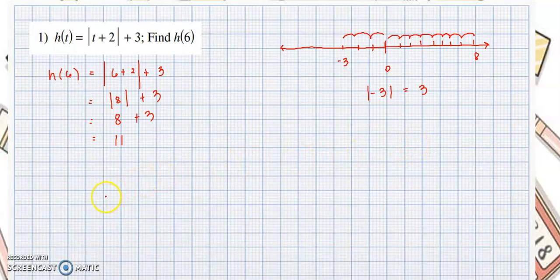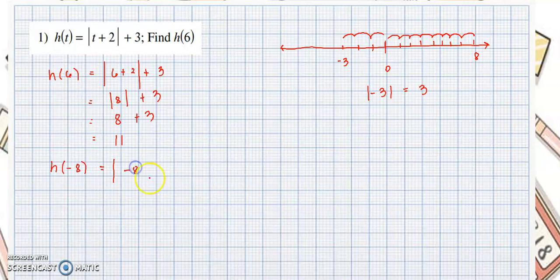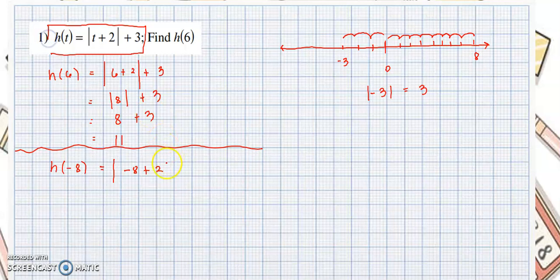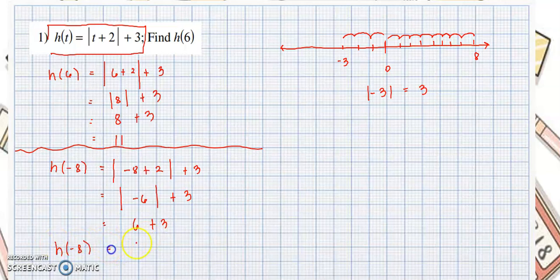Next, let's find h of negative 8. We change all values of t into negative 8, so this would be the absolute value of negative 8 plus 2, plus 3. We simplify: the absolute value of negative 8 plus 2 is negative 6, plus 3. The absolute value of negative 6 is positive 6, plus 3, so h of negative 8 equals 9.